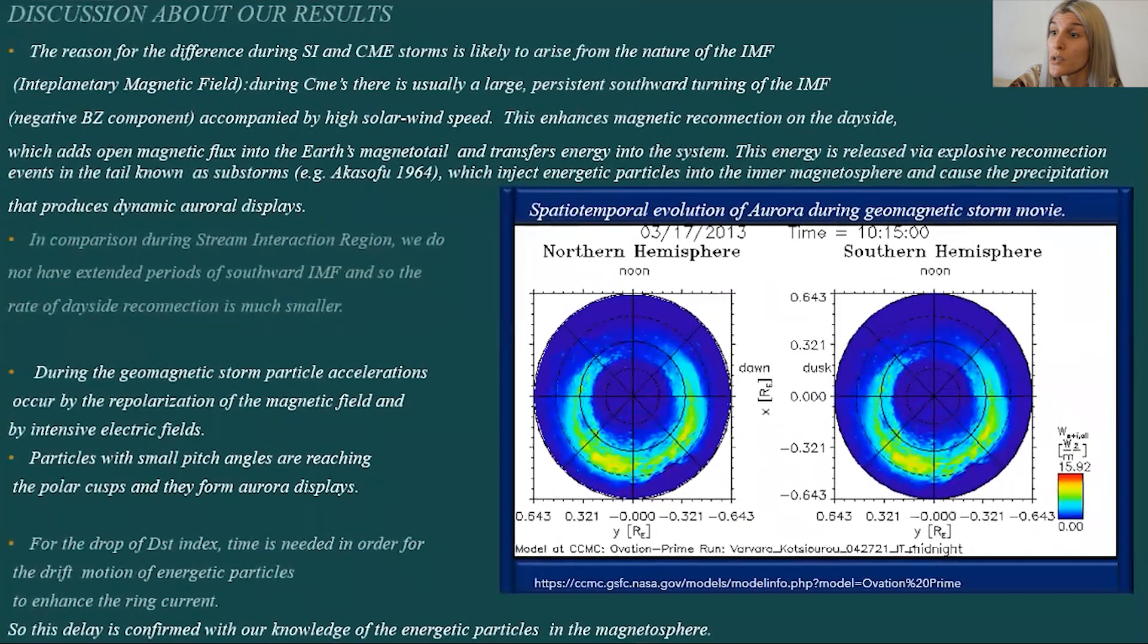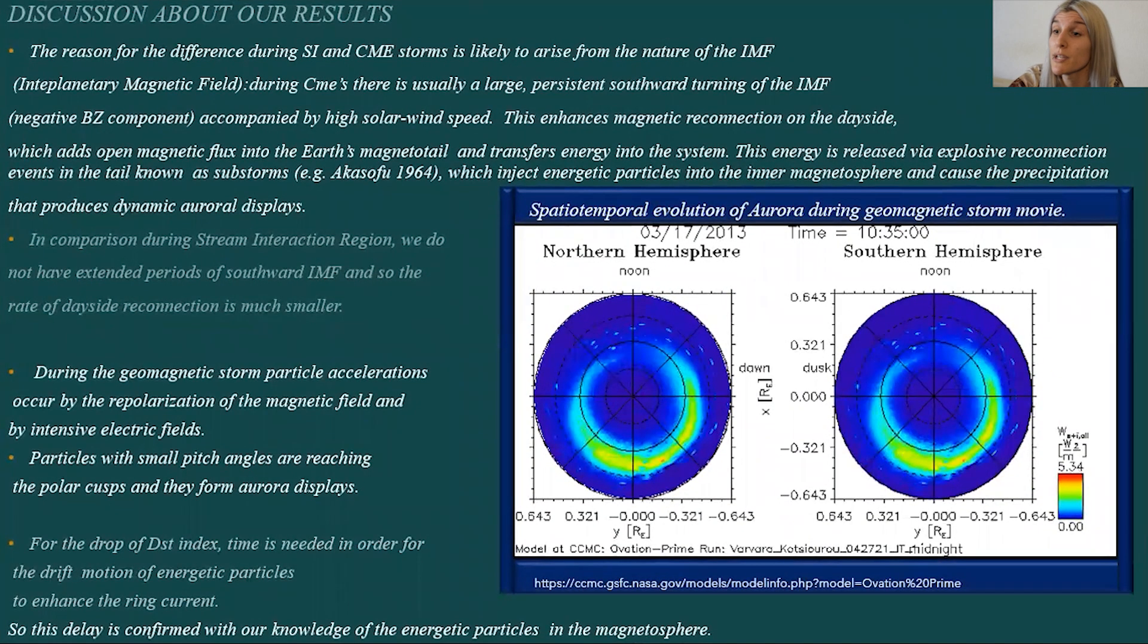In comparison, SIs do not have extended periods of southward IMF, and so the rate of day side reconnection is much smaller. That's why our second case is more intense than the first one.